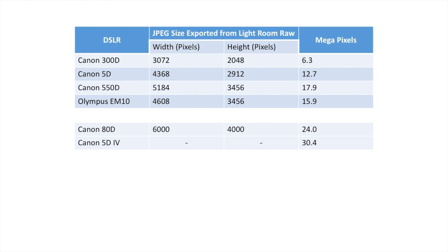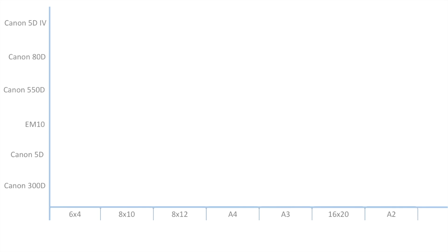The Canon 5D Mark IV — from press releases and information on the internet — can produce a thirty point four megapixel image. So with all these megapixels and with these cameras, what can they produce at 300 DPI? It's not surprising to see that the 13-year-old Canon 300D can only produce images up to six by four at 300 DPI.